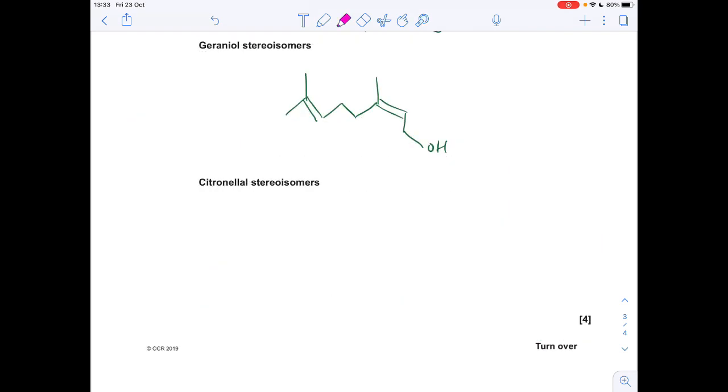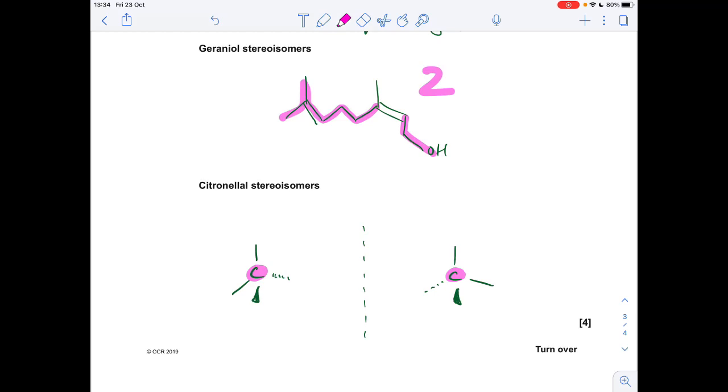So if you remember, it was the E form that had been shown in the question, so we need to draw the Z form. Why is it Z? Because the priority groups are on the same side of the carbon-carbon double bond. So this one here is the Z form.